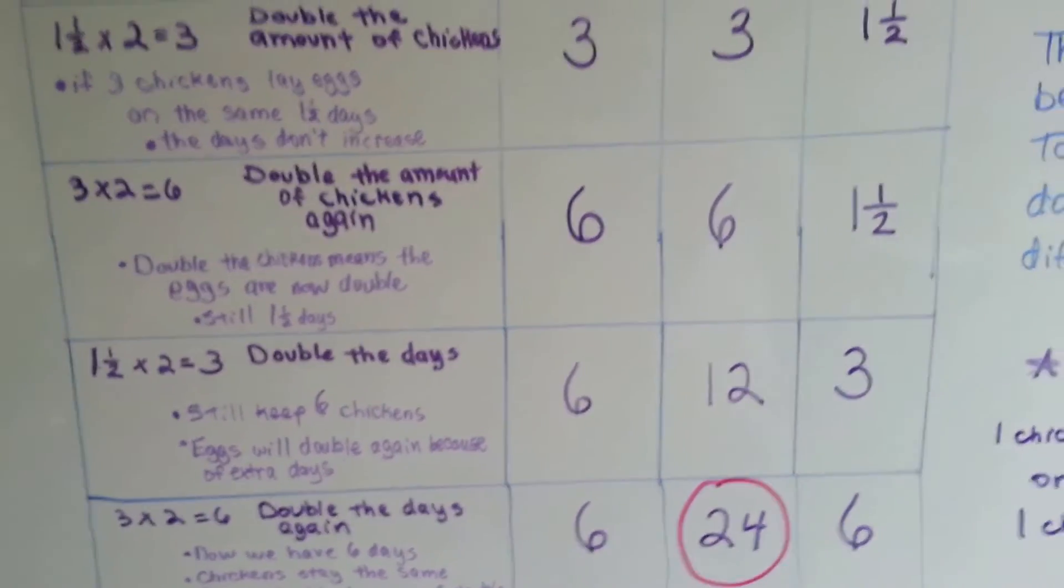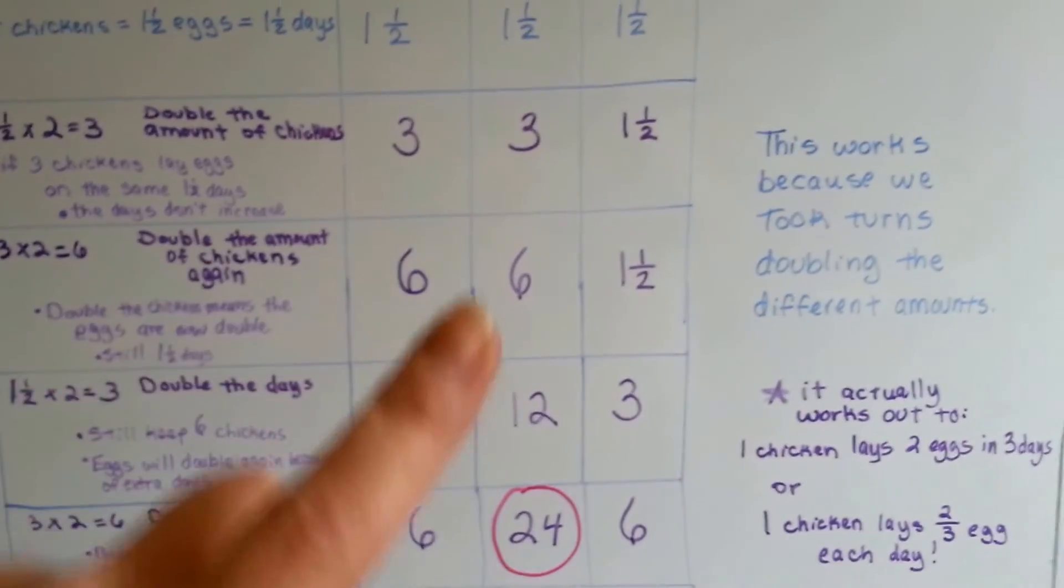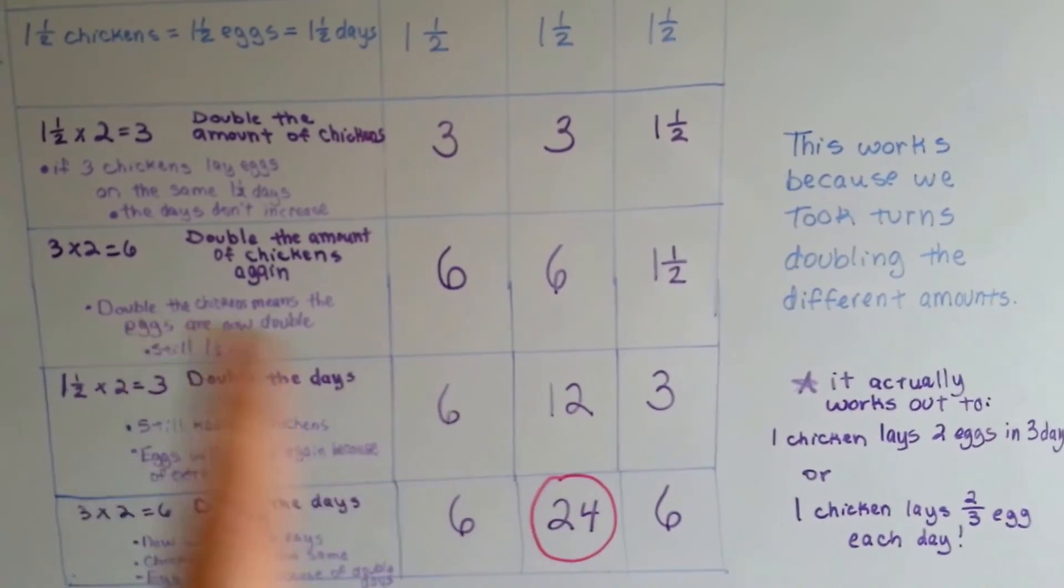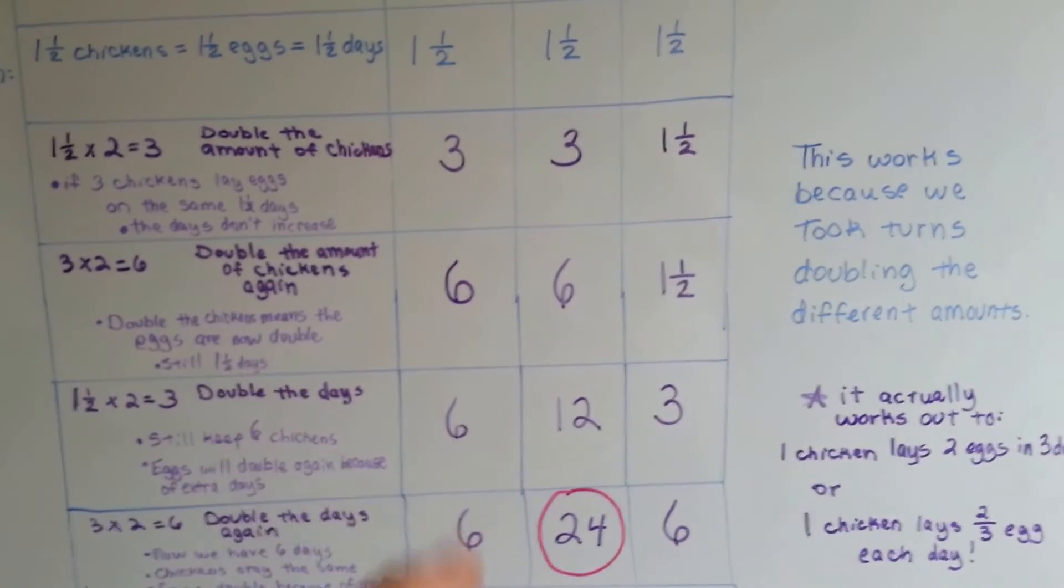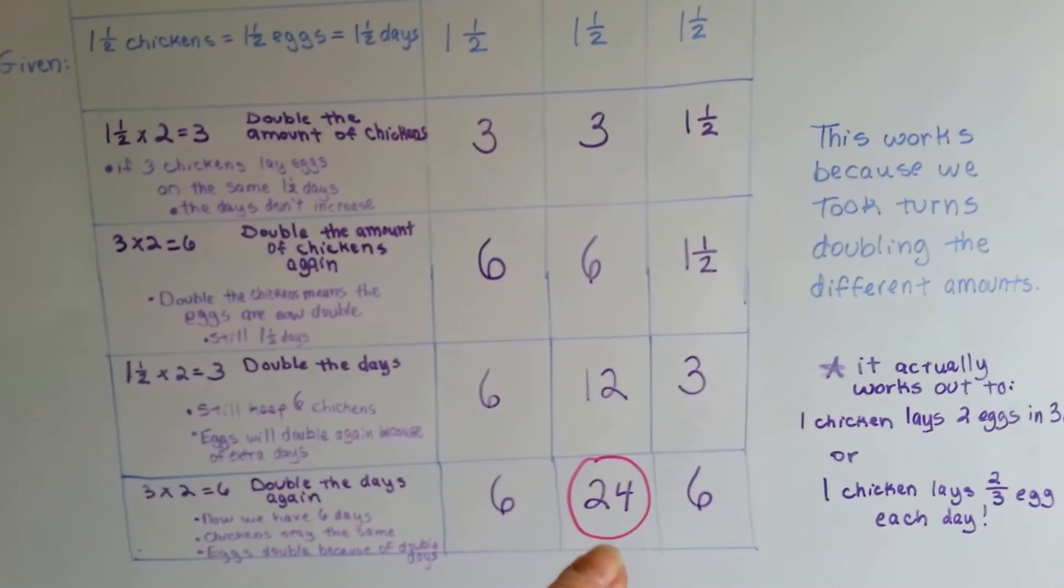Isn't that something? Now this worked because we took turns doubling the different amounts. We didn't double them all together because that won't work. You have to double the chickens and then double the days and just let the eggs follow.